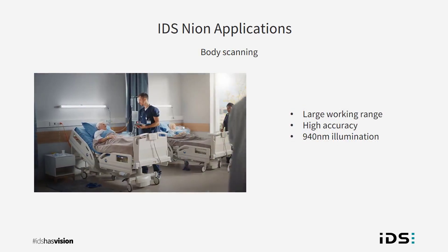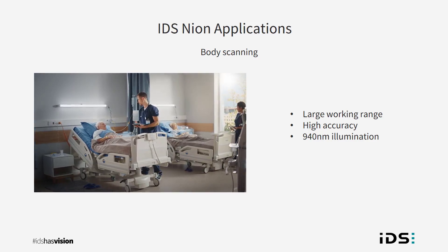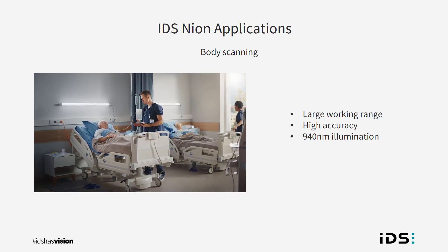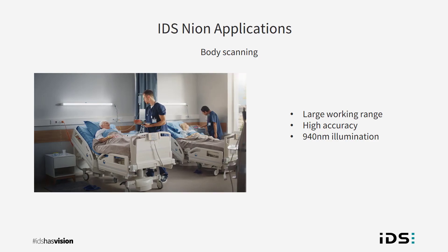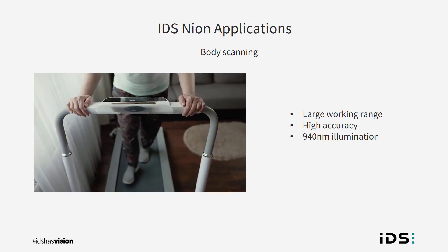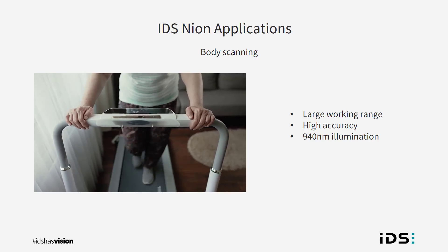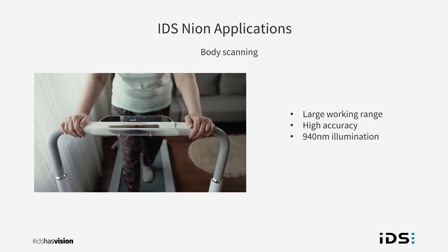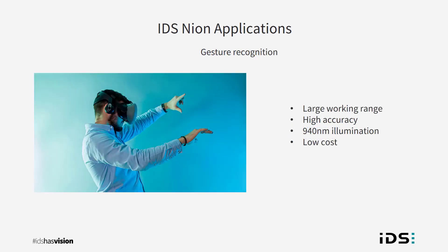We might also consider body scanning applications in areas such as medical — physiotherapy or patient monitoring — or in consumer-based applications such as augmented reality for fashion, accurate measurements for tailoring, or shoe fitting. Here the key features are a large working range, precise 3D data, and a light source that is invisible and works in environments where the lighting cannot be controlled. An extension to body scanning is gesture recognition, which can be used to control systems without contact, such as in gaming, virtual and augmented reality environments, home automation, or sign language translation. These applications benefit from excellent depth accuracy, infrared illumination that does not interfere with the user, and cost-sensitive hardware.